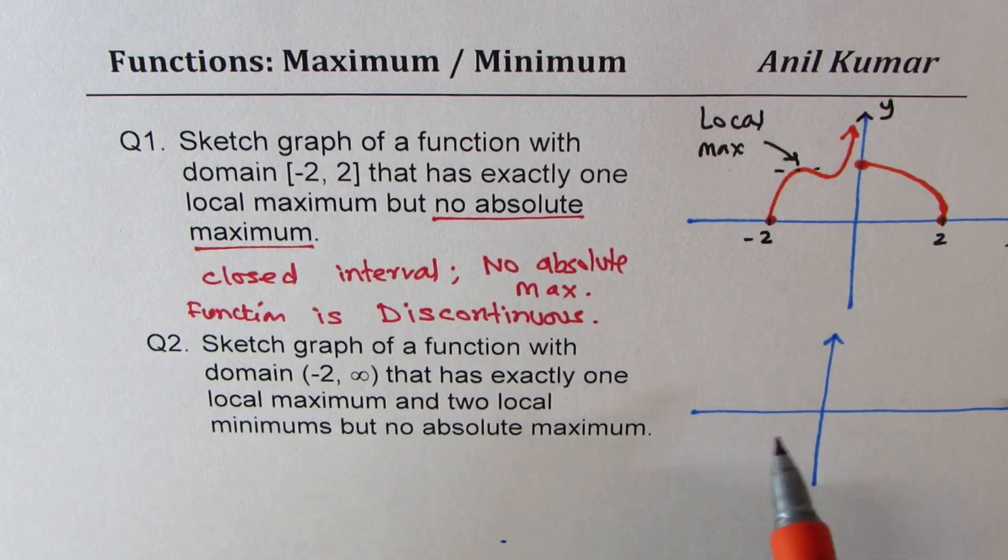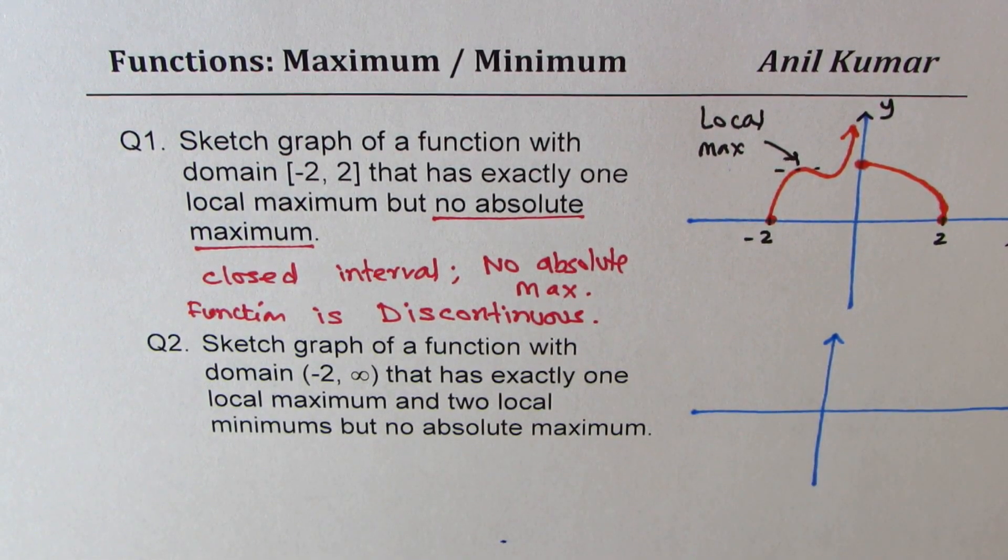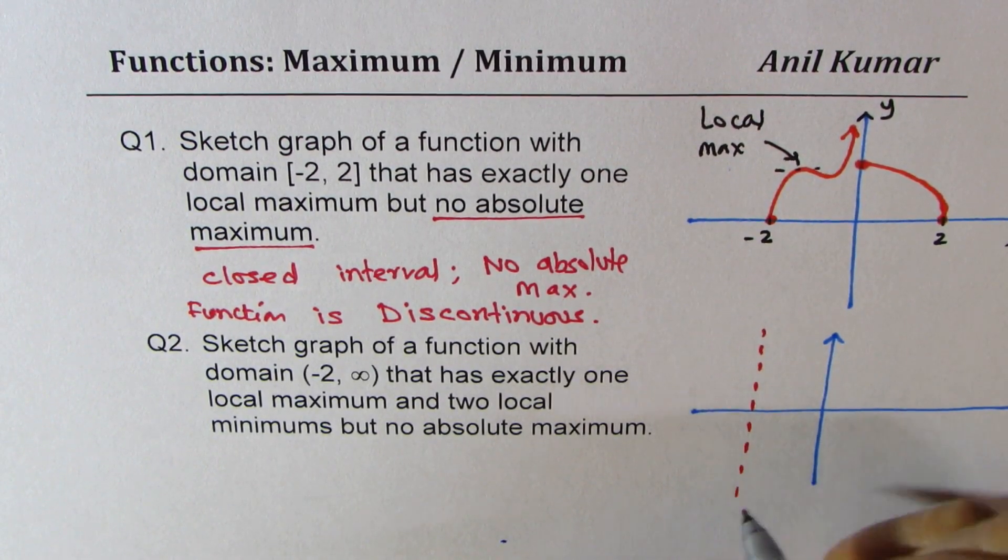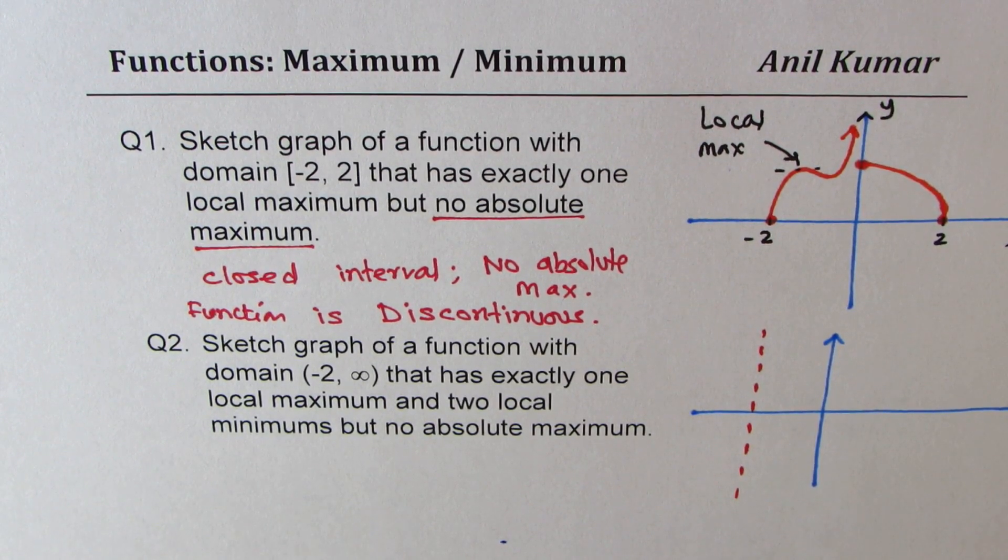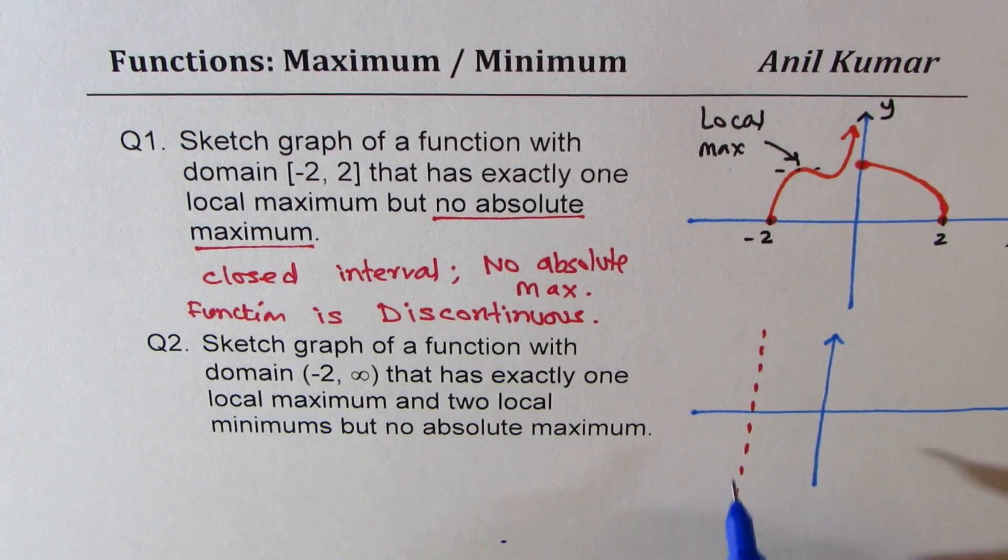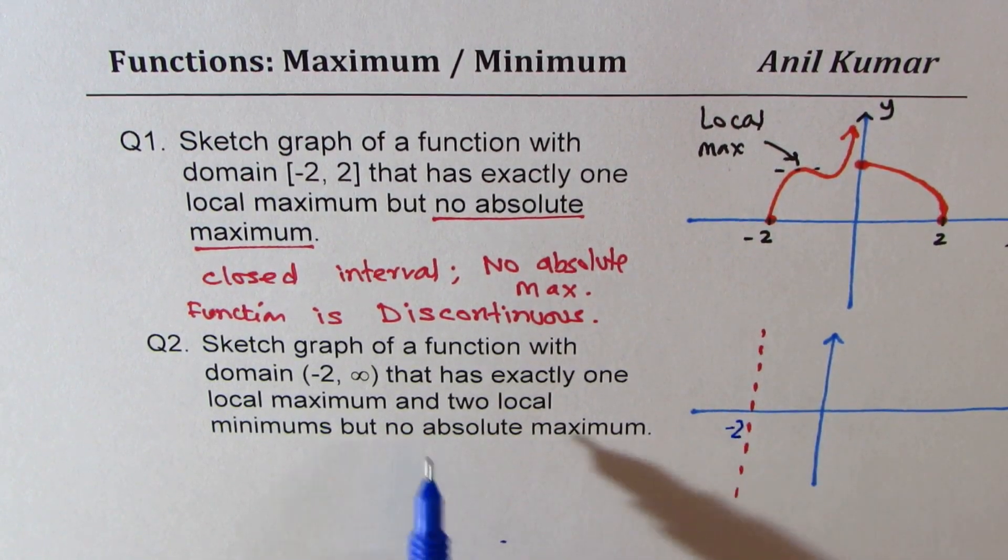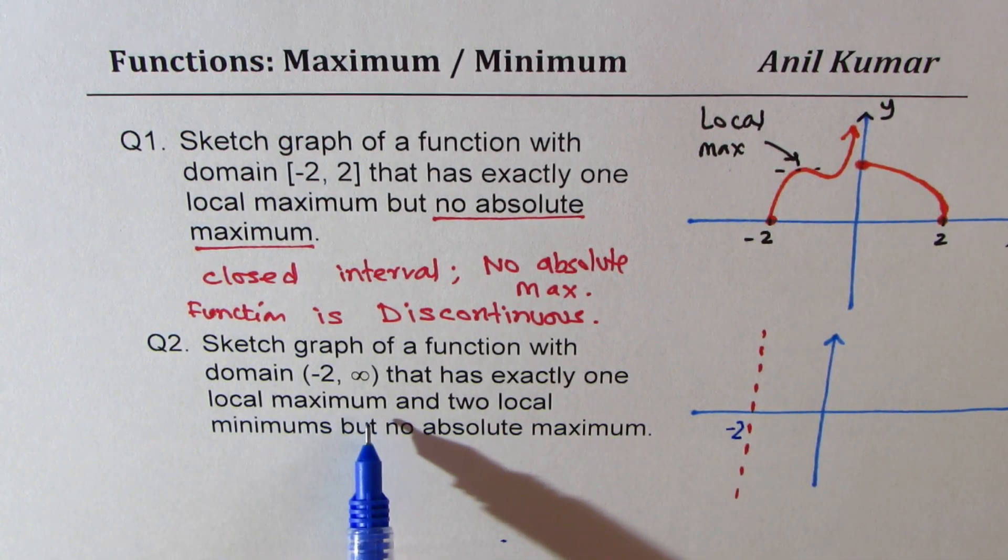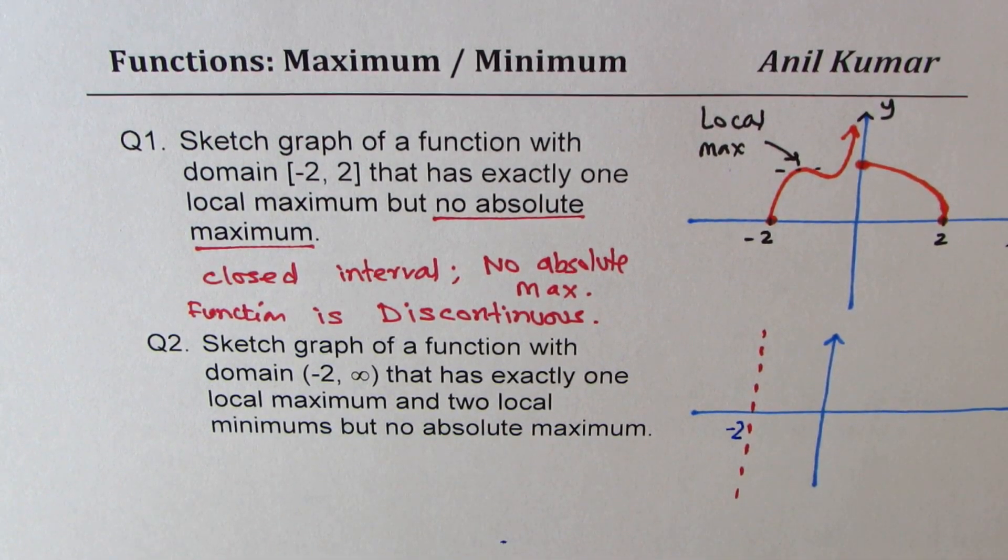So again what we will do here is we can have a vertical asymptote at minus two. So if I have a vertical asymptote here I am not including minus two. And it has exactly one local maximum and two local minimums.